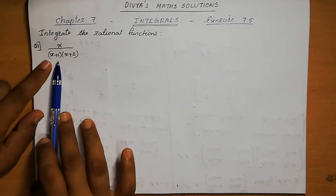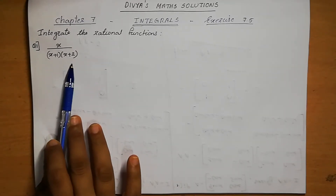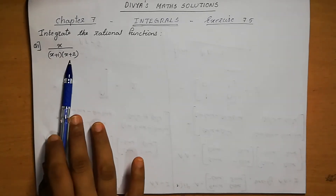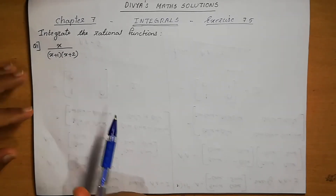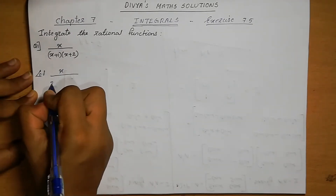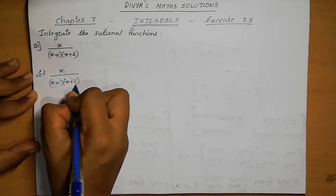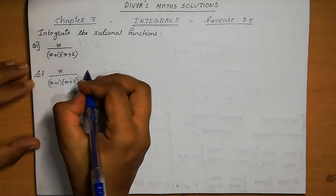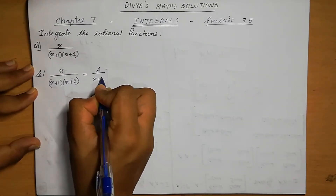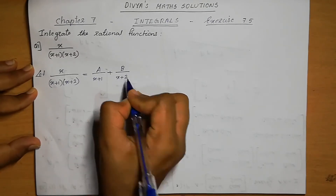This is in the form of x divided by (x plus a) into (x plus b). So, let x divided by (x plus 1) into (x plus 2) be equal to A by (x plus 1) plus B by (x plus 2).